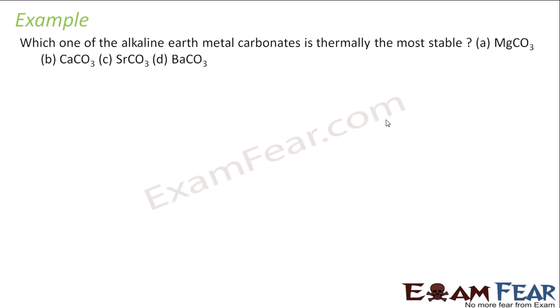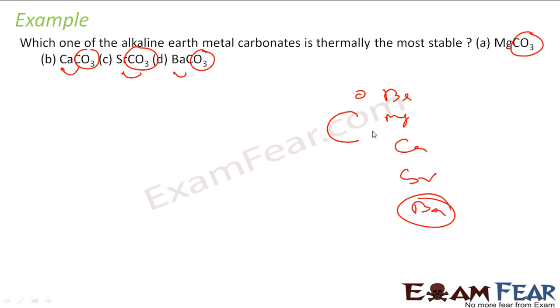The next question is which of the alkaline metal carbonates is thermally most stable? If you see, CO3 is a big ion. So for this, the matching metal has to be the big one. So let's see which one is the biggest one. If you see, I will write the order. Ba is the biggest. This guy is the biggest, so this will be most stable. So BaCO3 is most stable.